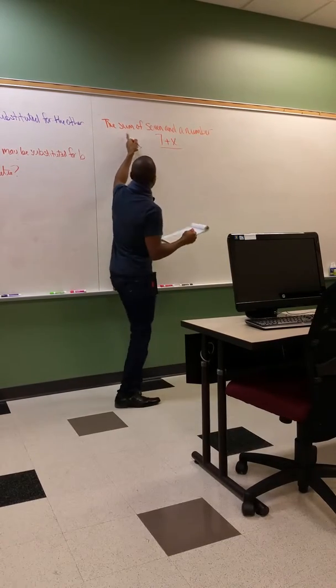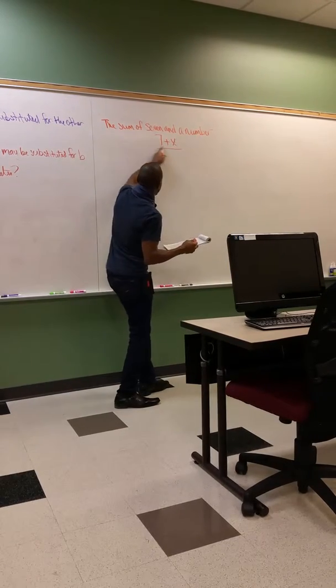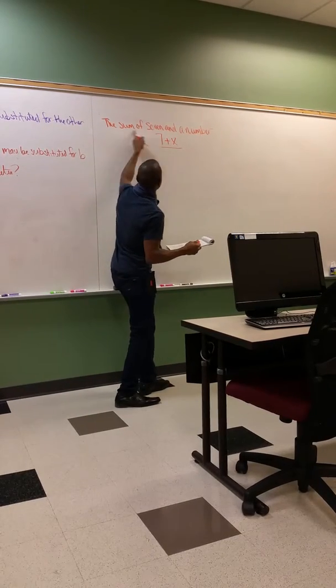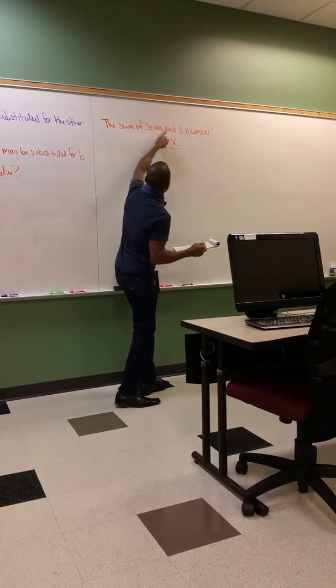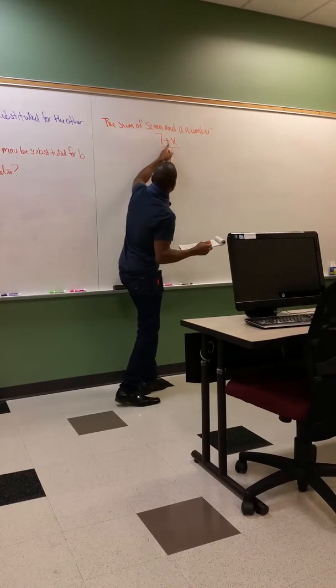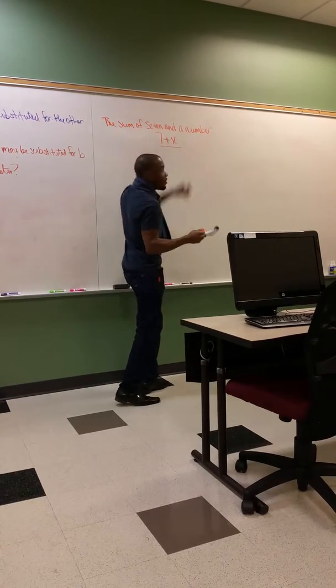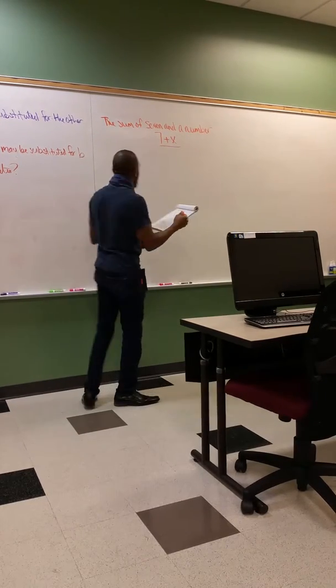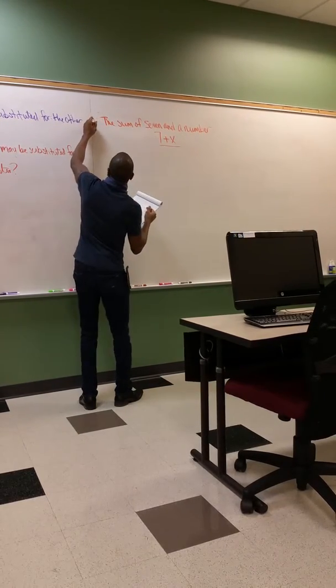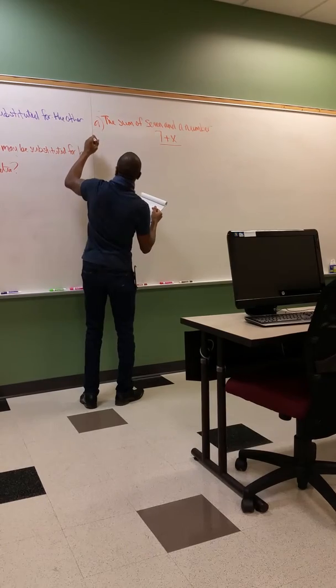The word 'sum' gives us the plus sign — 'of seven and' gives us the plus sign — 'a number' is whatever you want it to be: x.